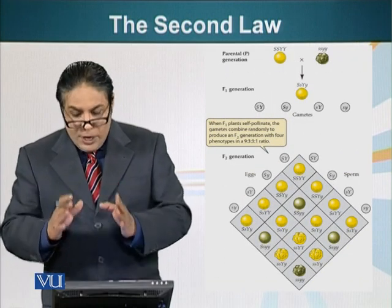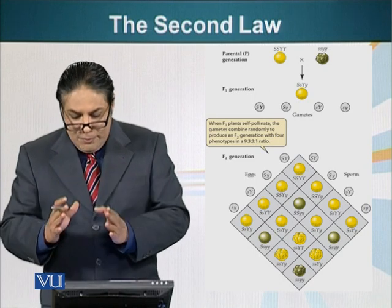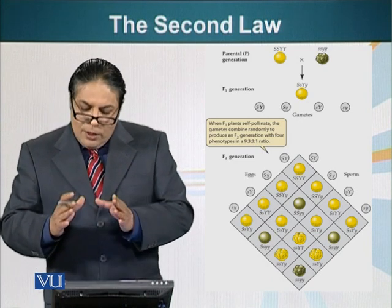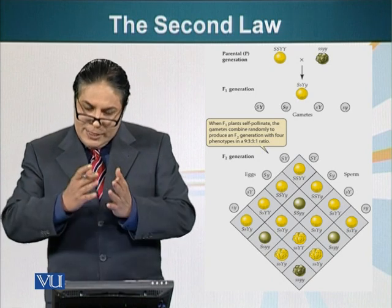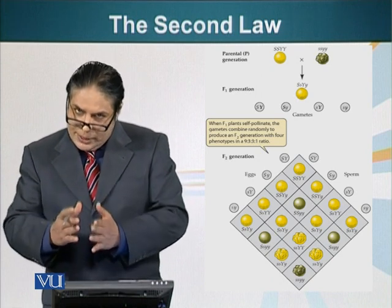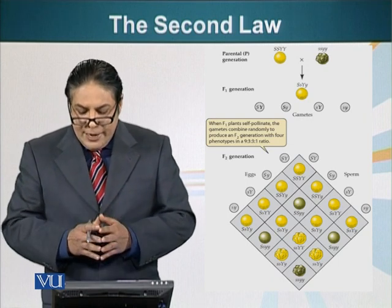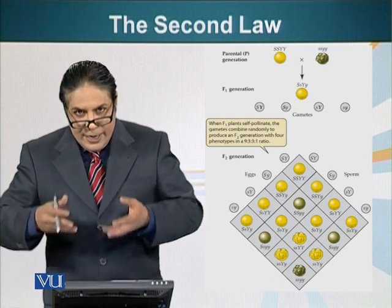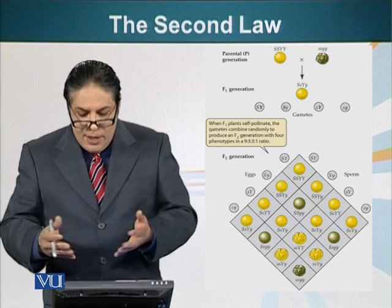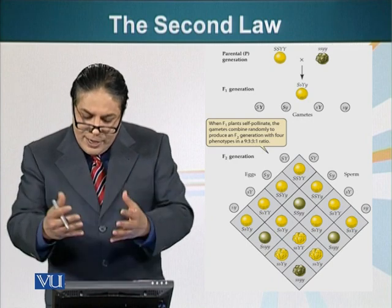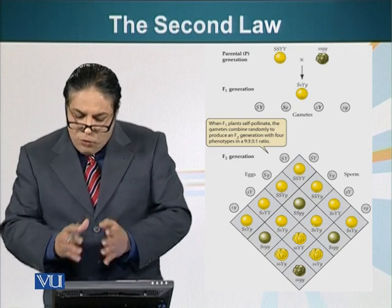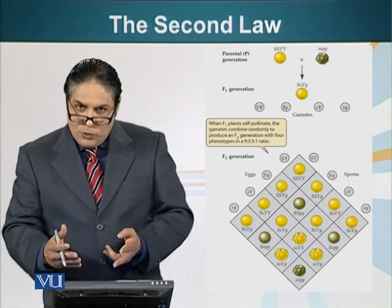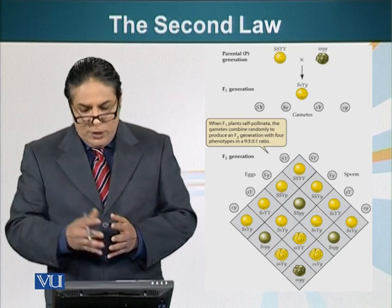Mendel crossed true-breeding capital S, capital Y plants with true-breeding small s, small y plants. The F1 progeny will be capital S, small s, capital Y, small y. If these two genes are divided into gametes independent of each other — independently assorted — we can have four combinations. Since we are looking at two traits simultaneously, this cross is called a dihybrid cross, as opposed to the monohybrid cross we looked at earlier.